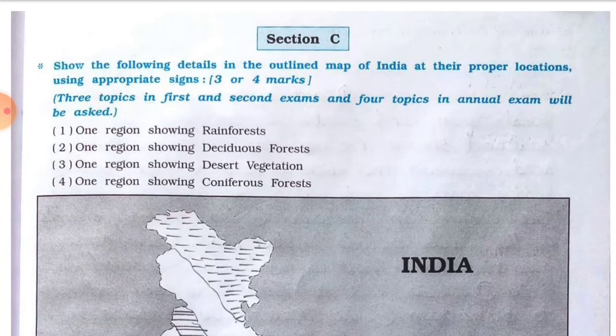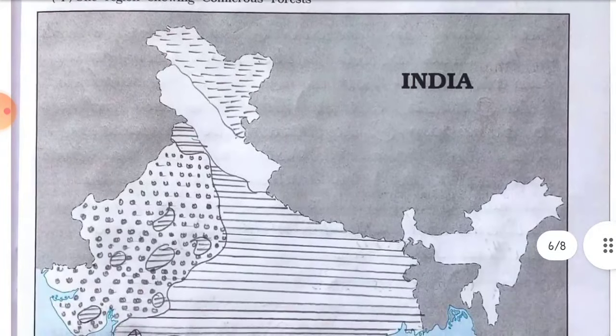Section C: show the following details in the outline map of India at their proper locations using appropriate signs. Three to four topics will be asked in exams. Number one, one region showing rainforest; number two, one region showing deciduous forest; number three, one region showing desert vegetation; number four, one region showing coniferous forest. Here we have the solution of the map.